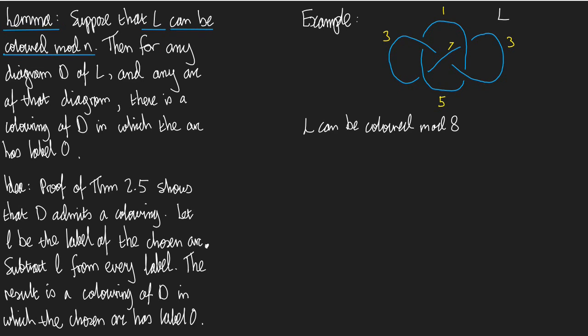What does that mean? You should look back at the definition. What it means is that L has some diagram which admits a colouring mod n, which means there's a labelling of the arcs, all the colouring equations hold, and the arcs aren't all congruent.